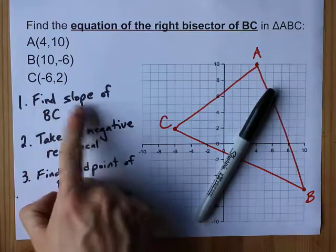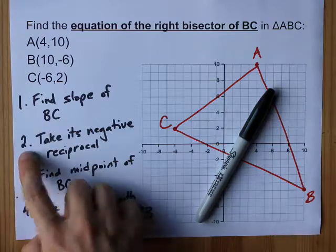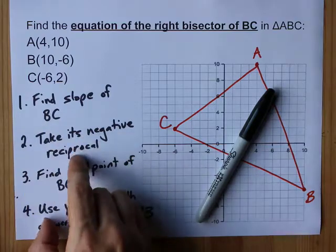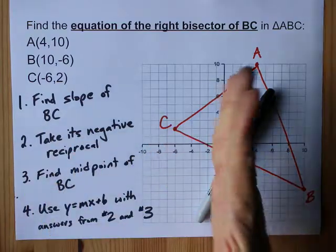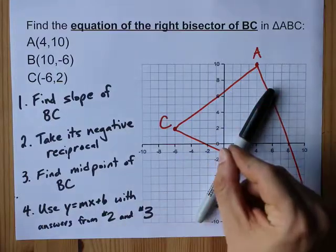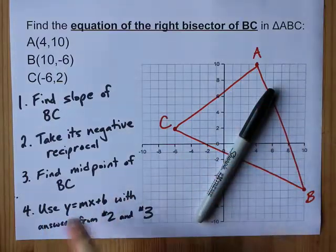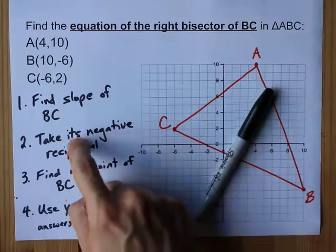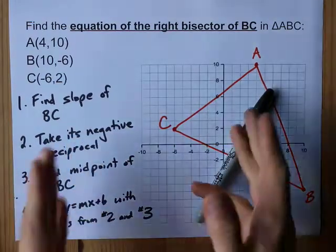Step one is going to be to find the slope of BC and then you're going to take its negative reciprocal. That's what's going to give you the slope at 90 degrees. Then we're going to find the midpoint and use y equals mx plus b with that point and our new slope. Let's do it.